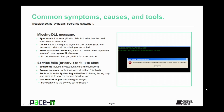Every once in a while you'll get a missing DLL message. The symptom is that an application fails to load or function and gives you a missing DLL message. The cause is that the required dynamic link library file — which is reusable code — is either missing or corrupt. Tools to recover from this include system file checker with the scan now option, which will often reload the proper DLL file. In some cases it may be necessary to register the DLL file using the regsvr32 command. Whatever you do, do not download third-party DLLs from the internet — that's a common way to download and install malware on your machine.